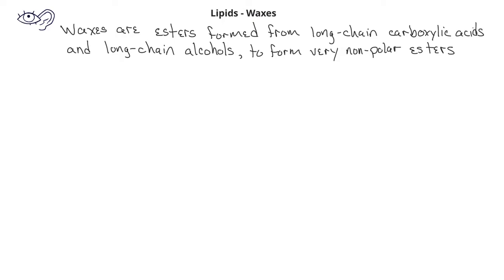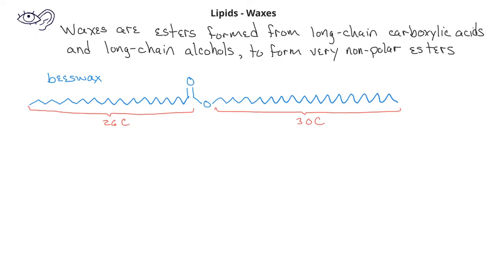Beeswax is one common example of a wax. It's formed from a 26-carbon carboxylic acid and a 30-carbon alcohol. Because of their very long, non-polar hydrocarbon components, waxes are very water repellent.